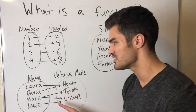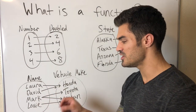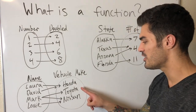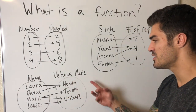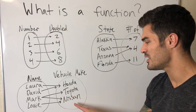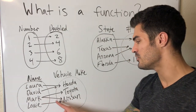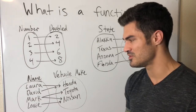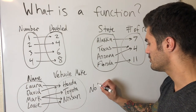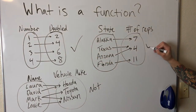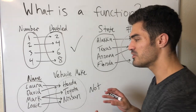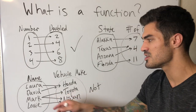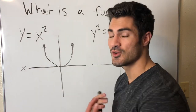Now consider names mapped to the vehicle make they own — Honda, Toyota, Nissan. The problem is Mark owns two vehicles: a Toyota and a Nissan. Two arrows come from Mark, meaning two things are being spit out for one input. This is not a function. When looking at mapping diagrams, if any input has two arrows going to two different outputs, it is not a function.